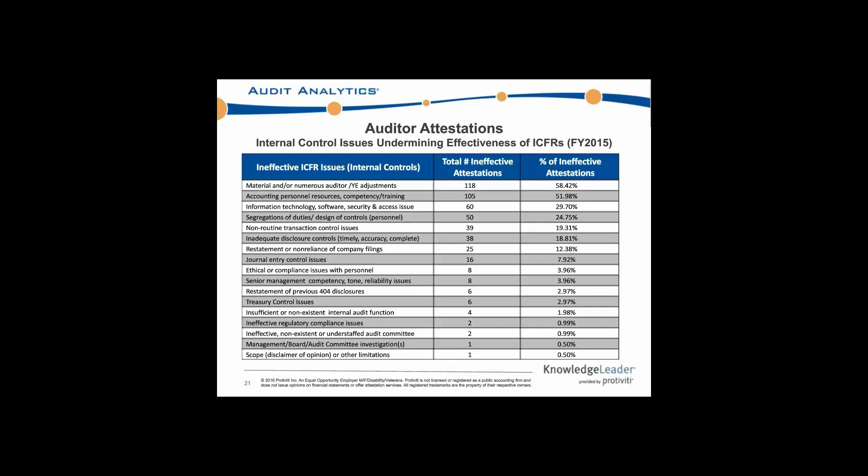It's also worth noting that these percentages, if you were to add them up, will be well over 100%. A company can disclose many internal control and accounting issues leading to the failure. It's not uncommon for companies to disclose two, three, four, or even more issues that resulted in the internal control failure.